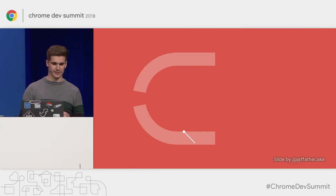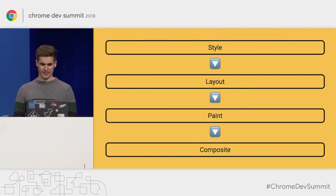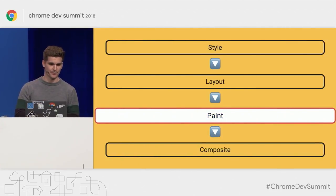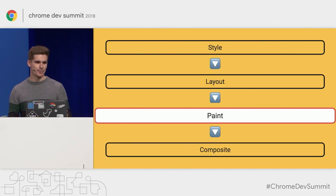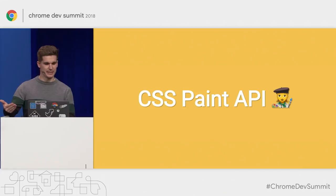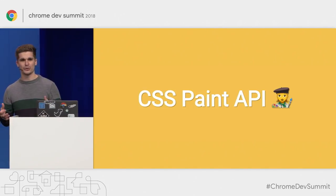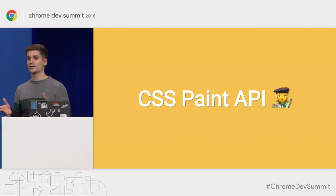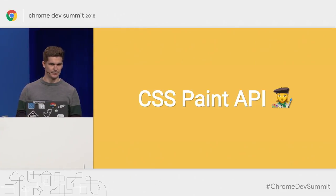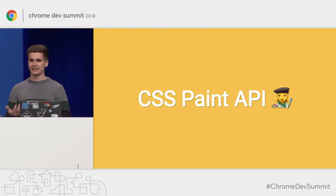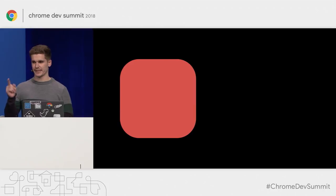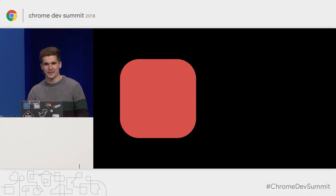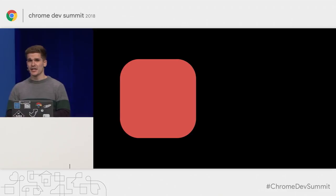Now that we have worklets in our back pocket, we can talk about the very first Houdini API — the paint worklets. The API is called the CSS Paint API. As I said, all elements have to be painted sooner or later to appear on screen. So far, you've been able to use CSS to customize how your elements appear, but only in the ways that CSS exposes. For example, if you want rounded corners, you can use border-radius and get this. But it turns out there are different ways to make a box seem like it has rounded corners, and if you want to use any of those other ways, you're kind of screwed today.